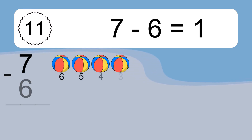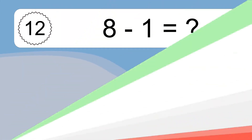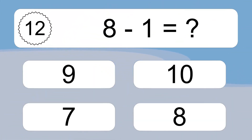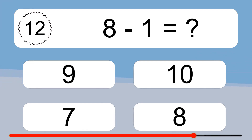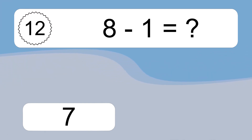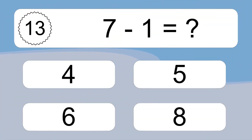7 minus 6 equals what? 7 minus 6 equals 1. Let's count it. 6, 5, 4, 3, 2, 1. 8 minus 1 equals what? 8 minus 1 equals 7. Let's count it. 7.